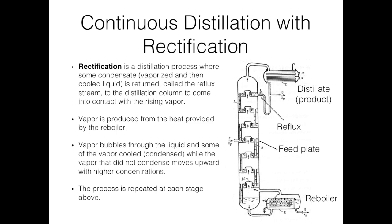The last method is continuous distillation with rectification. Rectification is defined as a distillation process where some of the condensate is returned back into the distillation column to come into contact with the rising vapor. Vapor is produced from the heat provided by the reboiler, which heats the column and vaporizes some of the mixture. That vapor rises through the column, bubbling through the liquid flowing down. While flowing through this liquid, some vapor condenses while some liquid does not condense and moves upward with ever-increasing concentration at each stage.